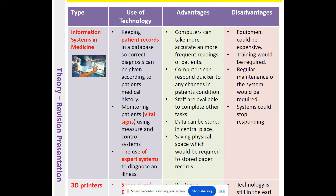Technology can be used to monitor patients' vital signs using measure and control systems. For example, during an operation, measure-and-control systems monitor the patient's condition without needing to watch them 24/7. Expert systems can also be used to diagnose an illness, providing a more accurate diagnosis. Computers can take more accurate and frequent readings of vital signs, respond quicker to any changes in a patient's condition, free up staff for other tasks, and store data centrally so it can be accessed from any point in the hospital — saving physical storage space compared to folders of paper.